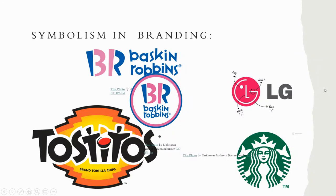In branding, we even see symbols. For Baskin Robbins, we see the 31 in the middle representing 31 flavors. In Tostitos, we see the people sharing the chips and dip in the middle of the word. And we have LG and Starbucks. All of these symbolize something.